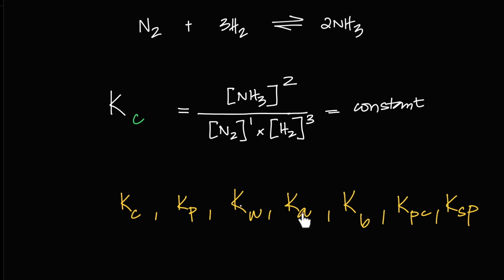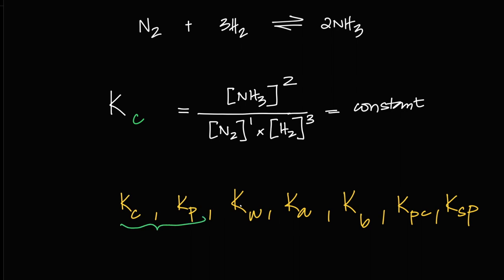Kw is water's equilibrium. Ka is for weak acids like ethanoic acid. Kb is for weak bases like ammonia. The partition coefficient is when things dissolve in two immiscible solvents like oil and water. Ksp is when salts dissolve partially in water. But for AS level, we'll only focus on Kc — the most basic version. Today we'll only do Kc.